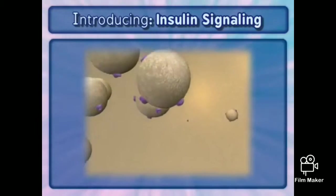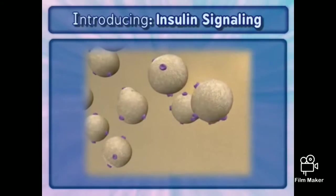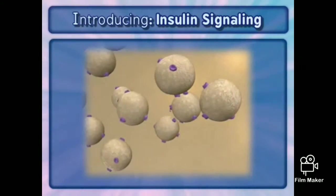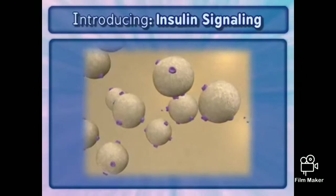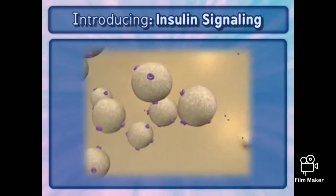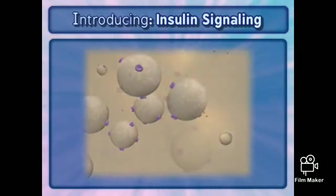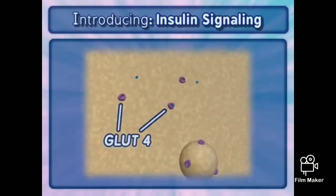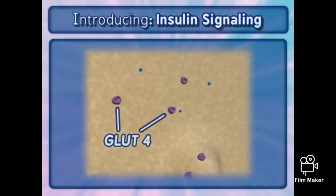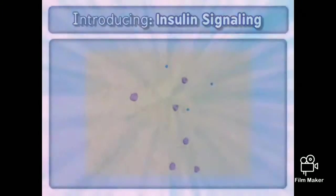In the protein recycling animation, we see a group of storage vesicles enriched with GLUT4 proteins continuously recycling from the cell membrane to an inactive location in the cytosol. GLUT4 is a protein that facilitates the movement of glucose into the cell.